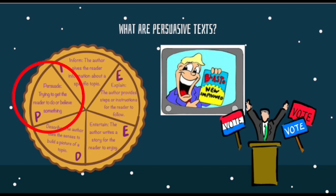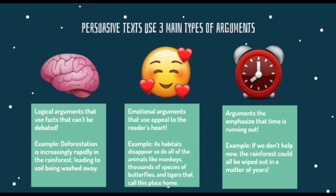We usually see this in things like commercials or ads, or even during elections when candidates are trying to convince us to vote for them or believe what they believe. Now, persuasive text — text whose job is to persuade — usually uses three main types of arguments.